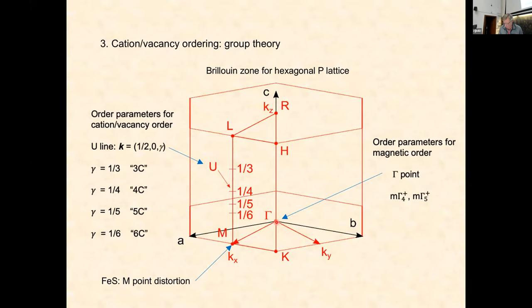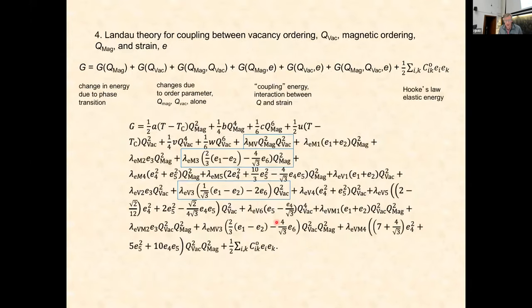I don't want to immerse you in it, but you should be aware that behind all this is Landau theory. Basically we understand the stability of these things in terms of the contribution of magnetic ordering, vacancy ordering, coupling between those orderings, coupling between magnetism and strain, vacancy ordering and strain, and we have a Hooke's law elastic energy. You can write out all those terms and describe at a fundamental level how these things interact.